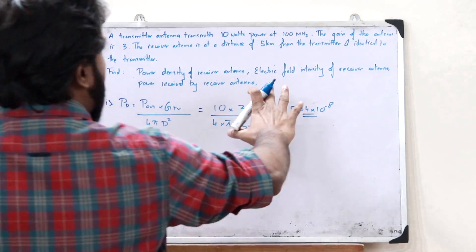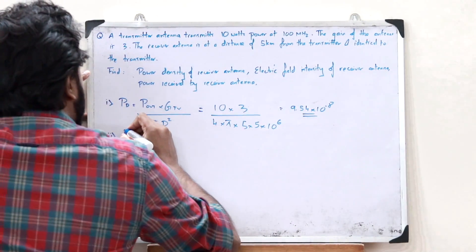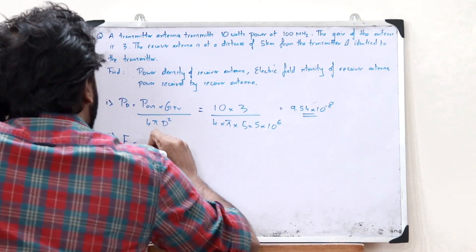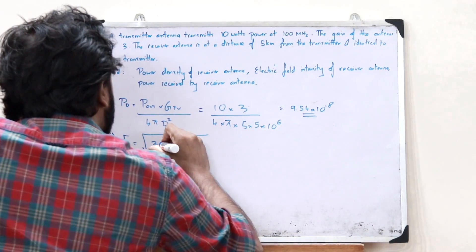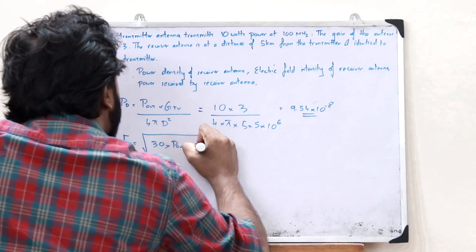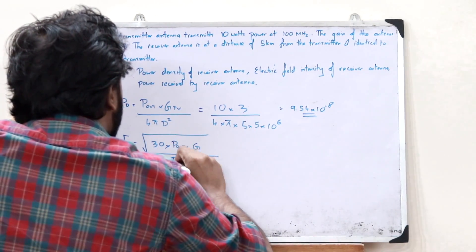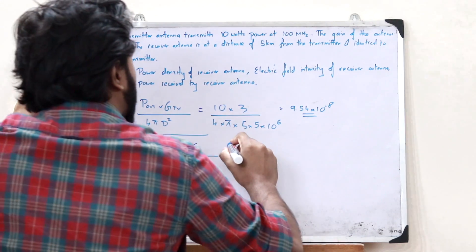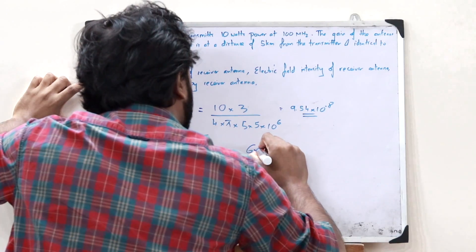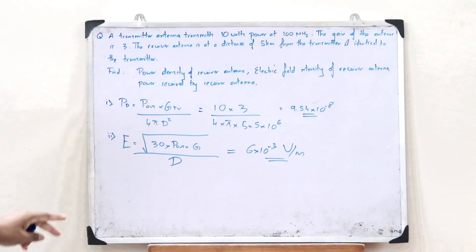Next, we find the electric field intensity at the receiver antenna. The formula is E = √(30 × P_out × G / d²), where d is the distance between the antennas. Substituting the given values, we get E = 6×10⁻³ volts per meter.